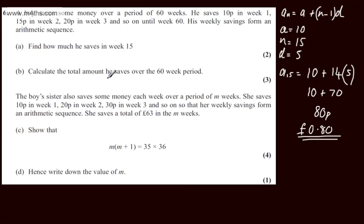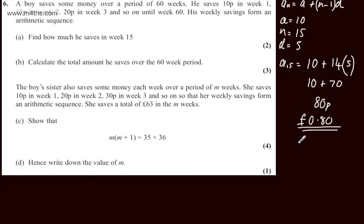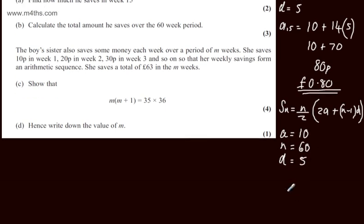In part b we need to calculate the total amount he saves over the 60 week period. For this one we're looking for a sum so we can use s of n equals n over 2 times 2a plus n minus 1 multiplied by d. Collecting the information a, n and d, we have a which is the first term 10, the number this time will be 60 and the common difference again is 5.